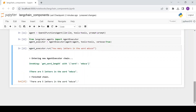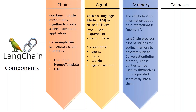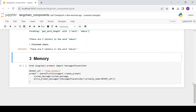However, this agent is stateless — it doesn't remember anything about previous interactions. This means you can't ask follow-up questions easily. Let's fix that by adding in memory. The ability to store information about past interactions is memory. LangChain provides a lot of utilities for adding memory to a system, such as conversation buffer memory. First, let's add a place for memory in the prompt by adding a placeholder for messages with the key 'chat_history'.